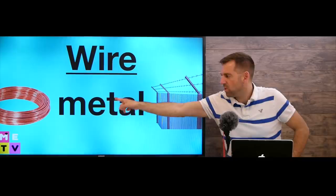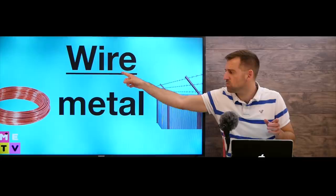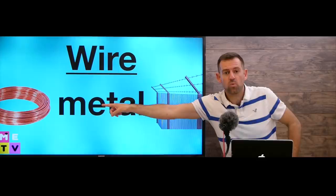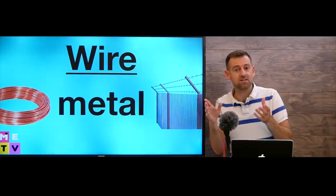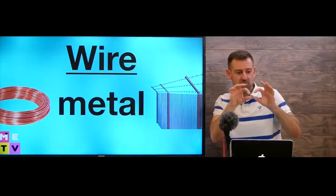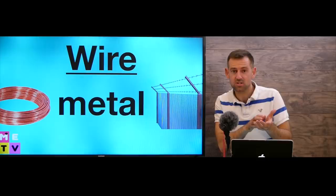We use the word wire usually — not always, but usually — when we're talking about metal. When you hear the word wire, you should think metal. Like that barbed wire fence — that's metal. And that copper wire — you can see it's copper, and copper is a kind of metal. If you can see that it's metal, then it's a pretty good guess to use the word wire.